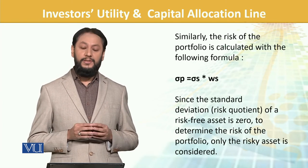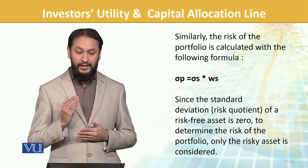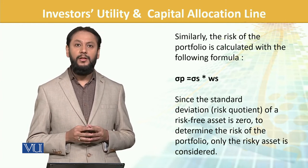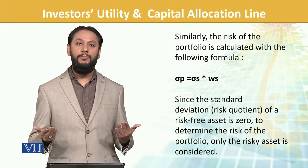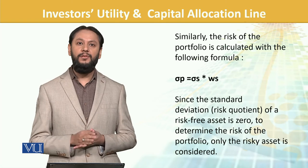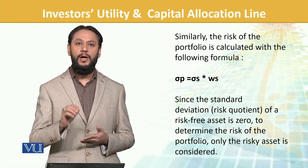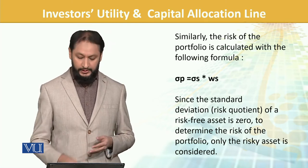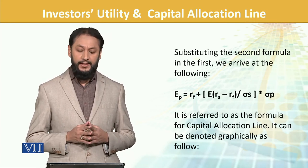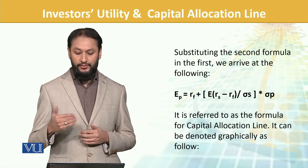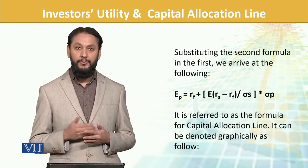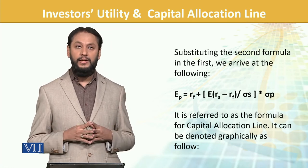Similarly, the risk of the portfolio is calculated as: standard deviation of the risky asset multiplied by its weight (w). Why only this? Because the other component — risk-free — has no risk. When you multiply anything by zero, you get zero. So in the portfolio, only the risky portion's standard deviation plays a role. Substituting the second formula into the first, we arrive at the CAL formula: risk-free return plus the risk premium term — and that is how CAL is calculated and reflected.